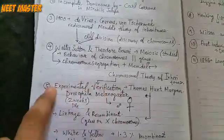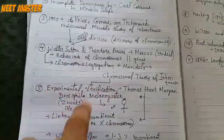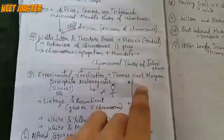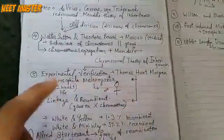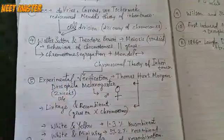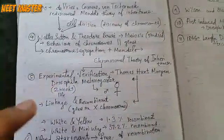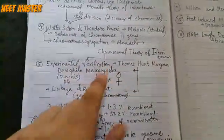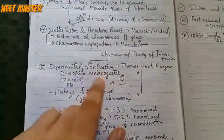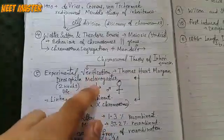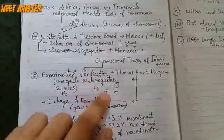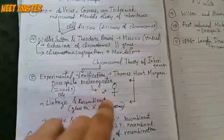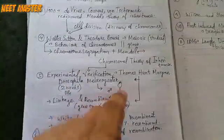We have experimental proof — this is an experimental verification. Thomas Hunt Morgan studied this using Drosophila. We are using Drosophila — the male and female. When we first started with Drosophila as a parent, Drosophila was normally used to study as well.